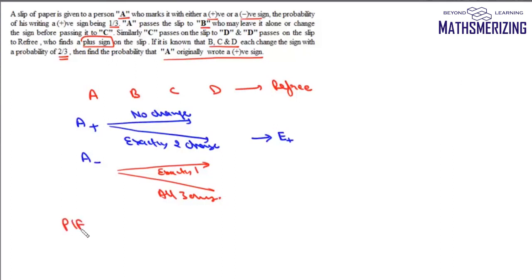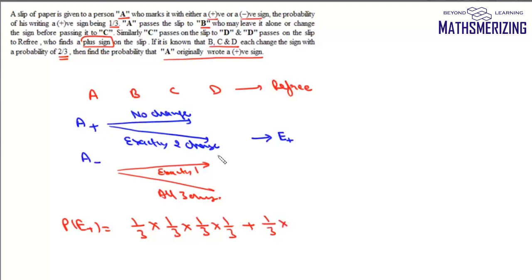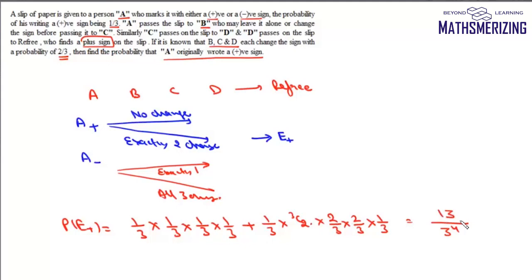First we find the probability of getting a plus sign. The probability of A marking it positive is 1/3. For Case 1 (A positive, none change): (1/3) × (1/3) × (1/3) × (1/3). For Case 2 (A positive, exactly two change): (1/3) × C(3,2) × (2/3)² × (1/3). Combining these over 3⁴, this gives 13 upon 3 to the power 4.